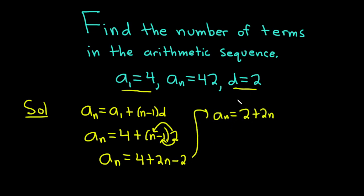We want the number of terms in the sequence. We know that the last term is 42. We can go ahead and plug that in. 42 is equal to 2 plus 2n. Subtract 2 from both sides. That's going to give us 40 equals 2n.